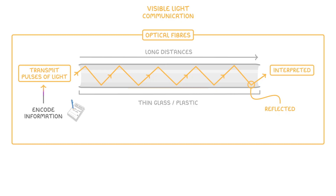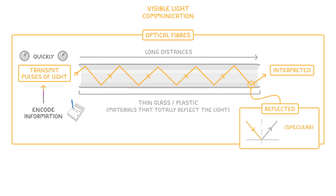By encoding information into the light pulses we can use this technique to transmit data really quickly over long distances. Importantly though, we have to use materials that will totally reflect the light rather than absorbing any, and also ensure that the reflection is specular rather than diffuse so that the light isn't scattered at all.